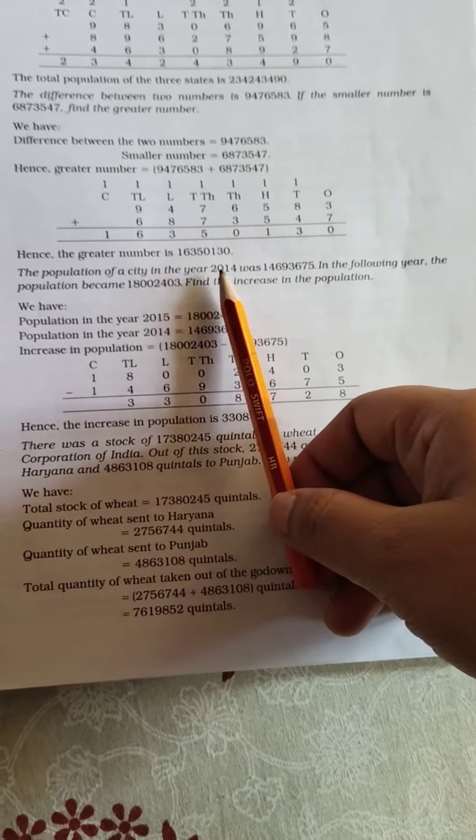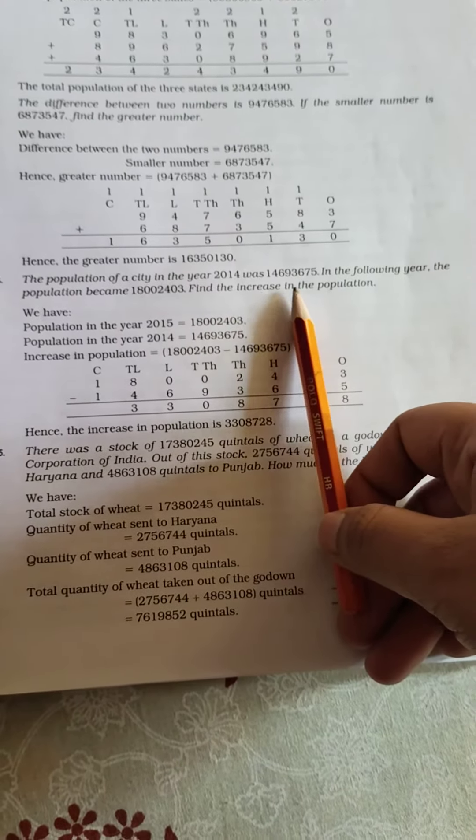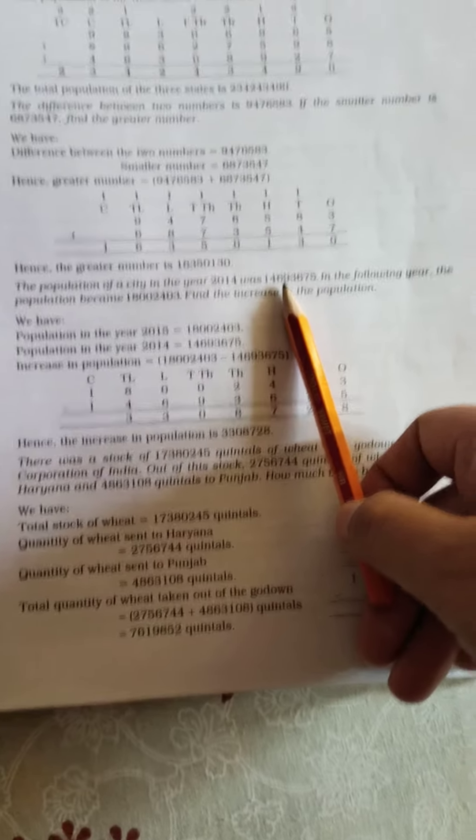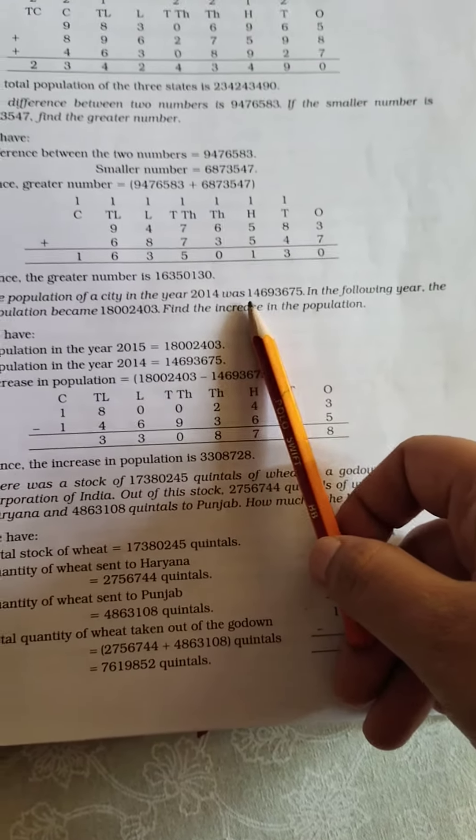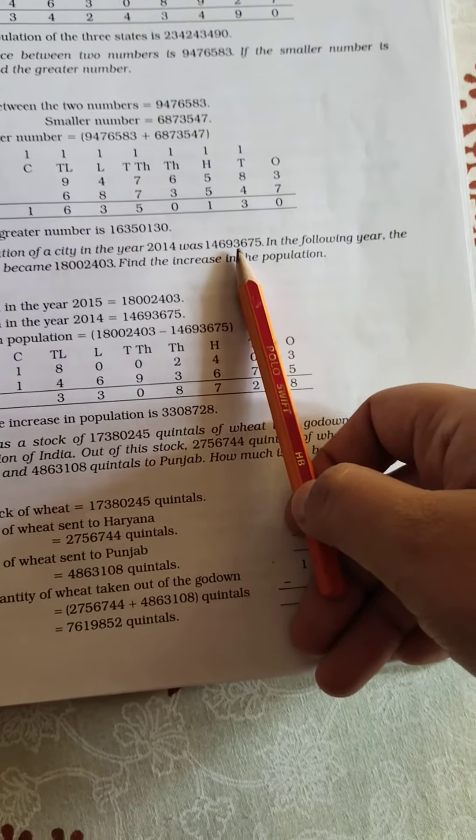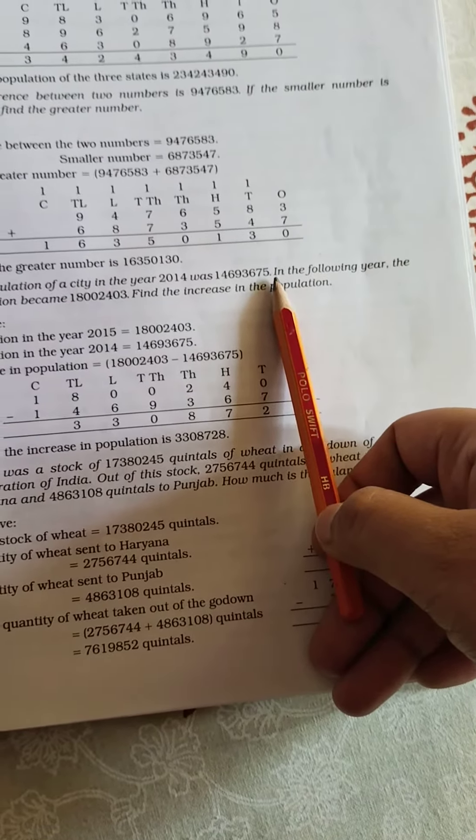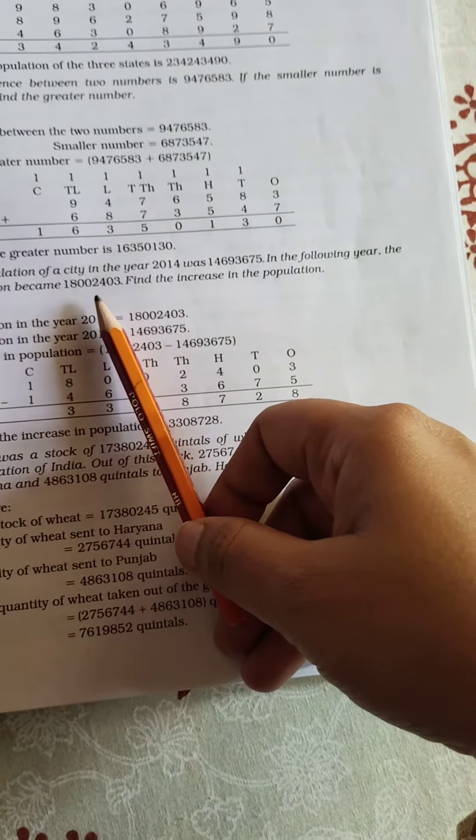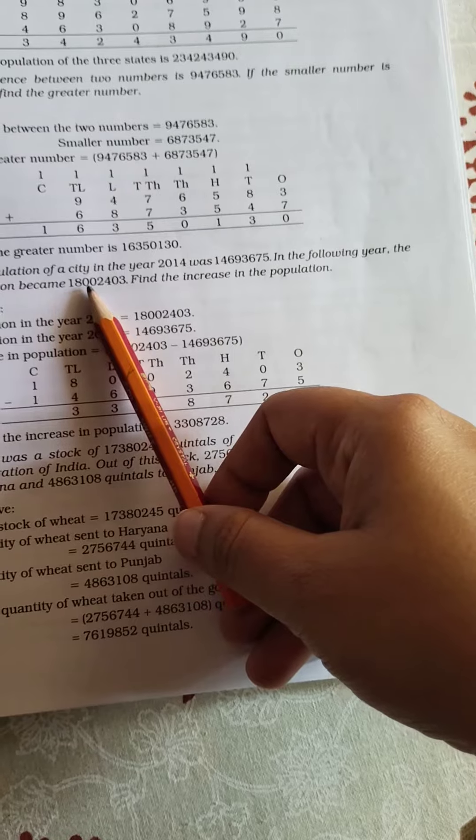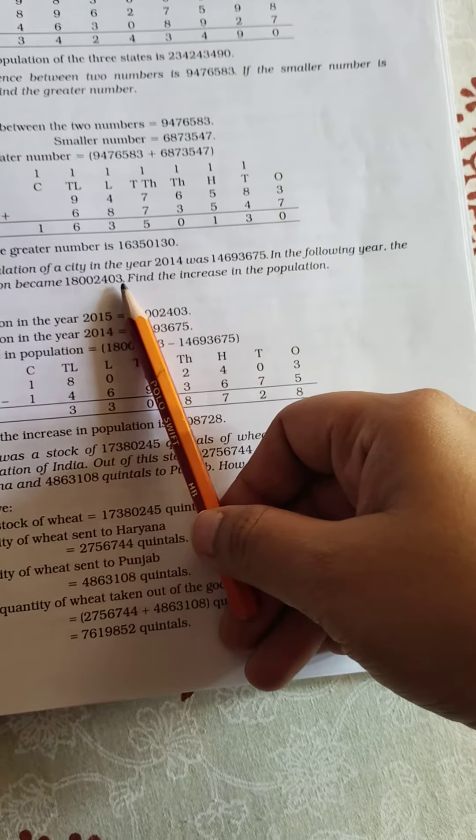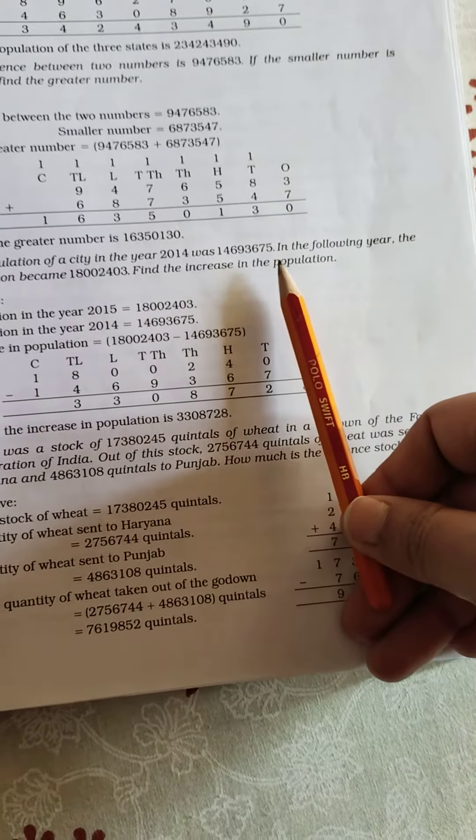The population of a city in the year 2014 was 1 crore 46,093,675. In the following year, the population became 1 crore 80,002,403. Find the increase in the population.